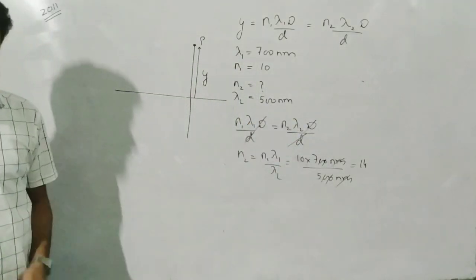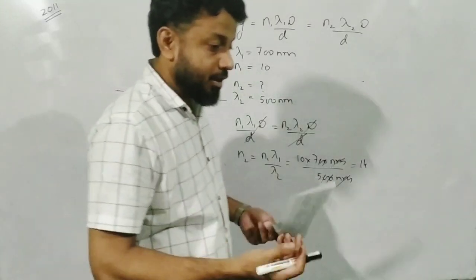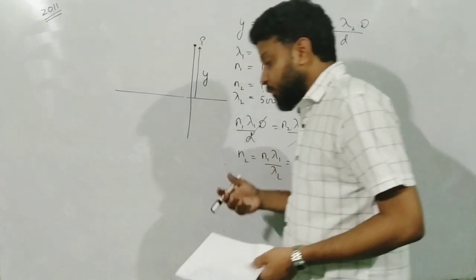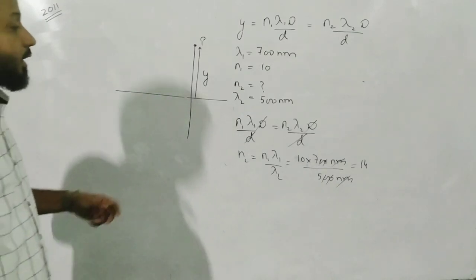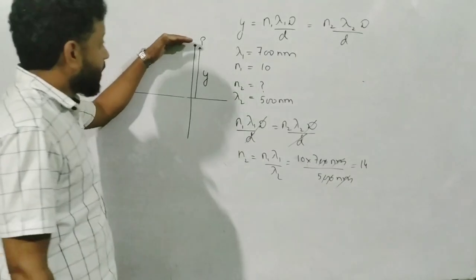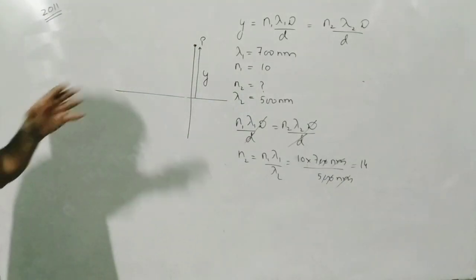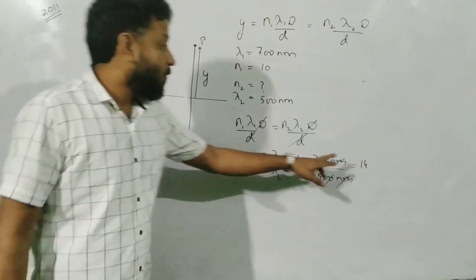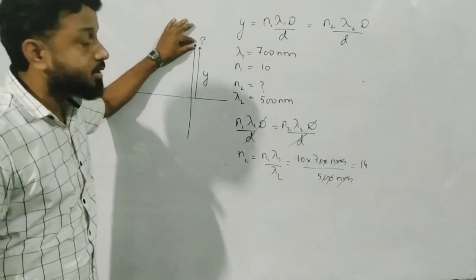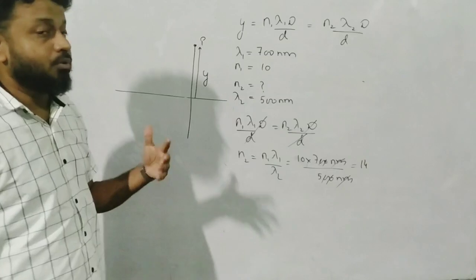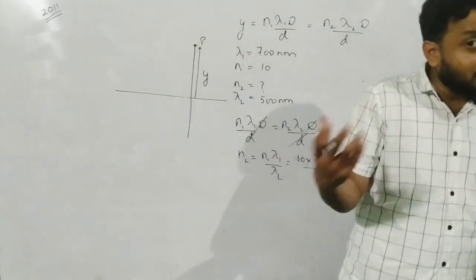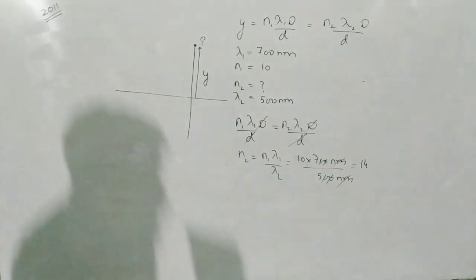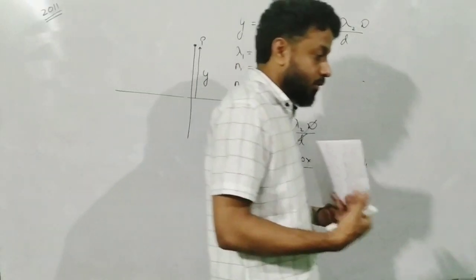The question is done. But I want you to understand this: imagine the experiment is done simultaneously with two wavelengths. You will find points on the screen where bright fringes overlap — like here, where the 10th order of 700nm light and the 14th fringe of 500nm light coincide at the same point. There will be many such overlap points.